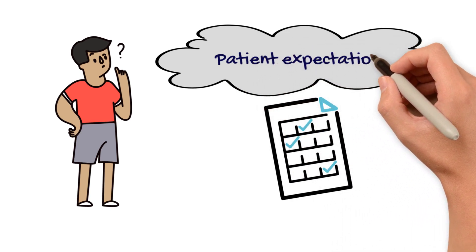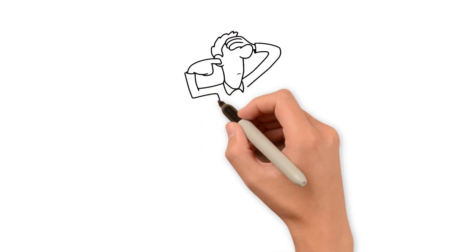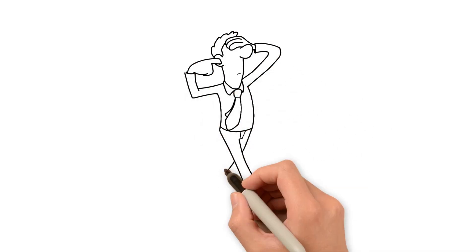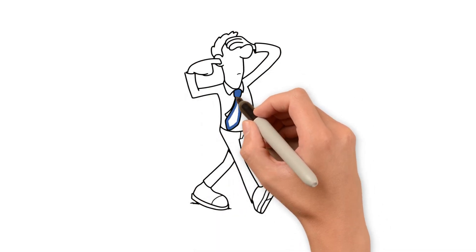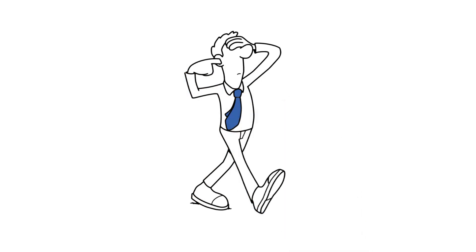This is where blinding comes into play. To ensure that the effects of the intervention are not impacted by the expectations of the participants, providers, or outcome assessors, blinding can occur at three levels.